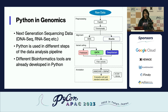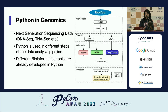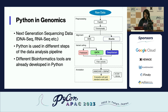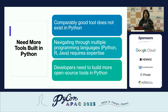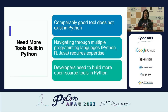As a researcher of infectious diseases, I work with genomics data, a special kind of data called next-generation sequencing data — for example, DNA and RNA sequencing data. What you see here is a very general data analysis pipeline for next-generation sequencing data. There are multiple steps and multiple tools involved. In almost every step of this pipeline, you can use Python, and there are already tools developed in Python, but I think we need more.